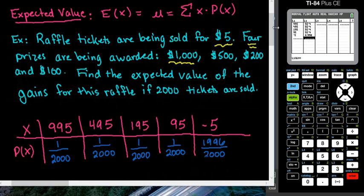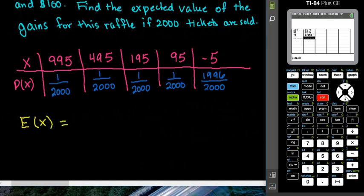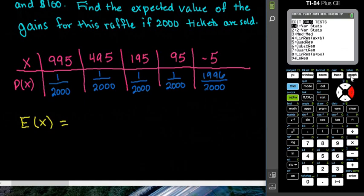So for this, what we are going to do is now find the expected value of x using the calculator. Remember that it's the same thing as the mean, so what we can do is go to stat and over to calculate, and remember that under one-var stats, this allows us to find things like the mean and the median, so I'm going to choose option 1.